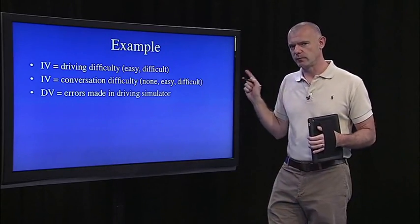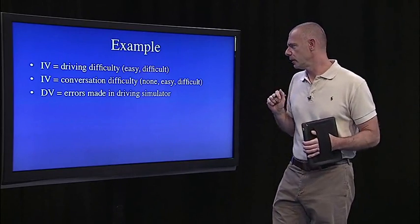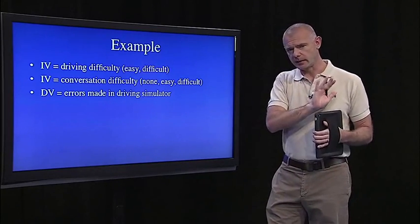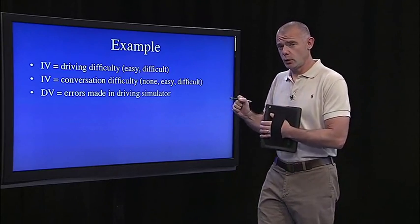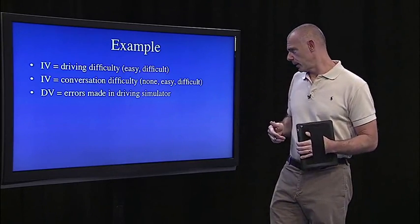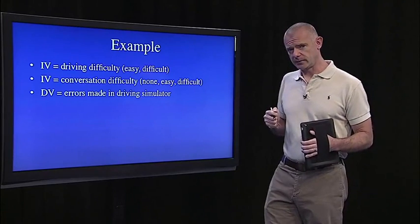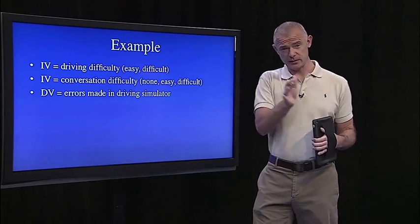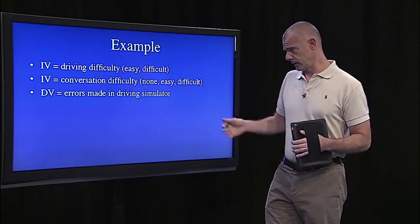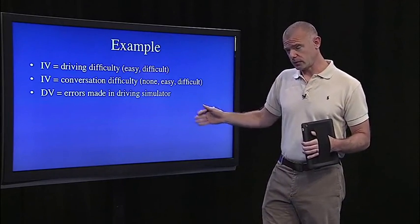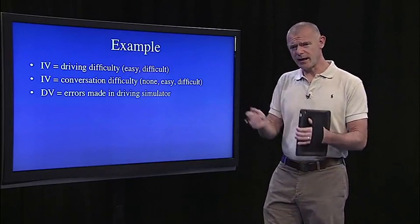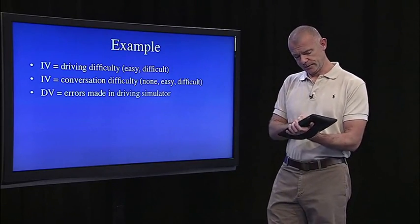As a control, they had subjects doing the simulator while not talking on a cell phone. Then they had subjects engaged in either an easy or difficult conversation, which I'll tell you about in a second. The dependent measure, or the outcome variable, is just how many errors they made in the driving simulator.